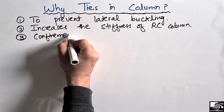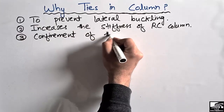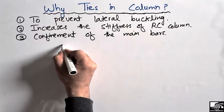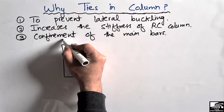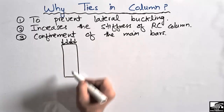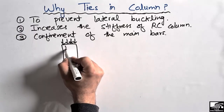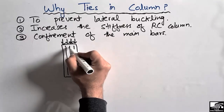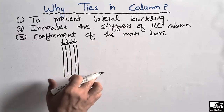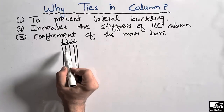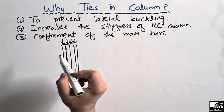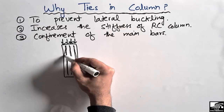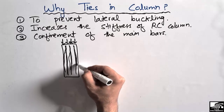Consider a column with load acting on it. The main bars, or longitudinal bars, take the vertical load. Without lateral ties, these longitudinal bars will slightly move from their original position upon loading — they will buckle slightly, as already discussed.